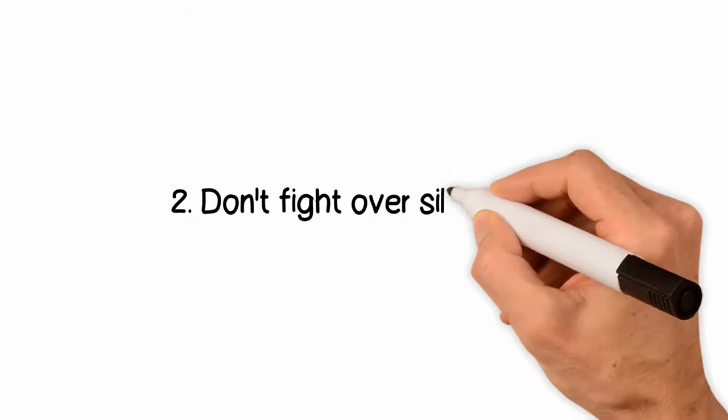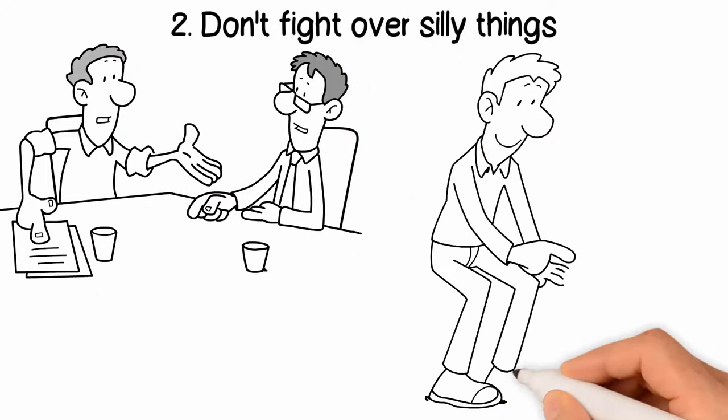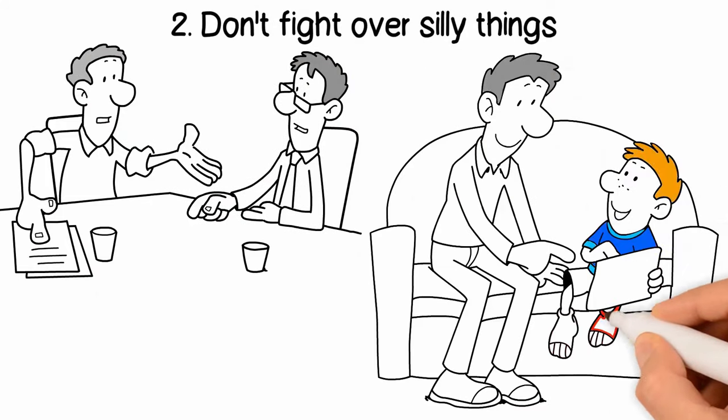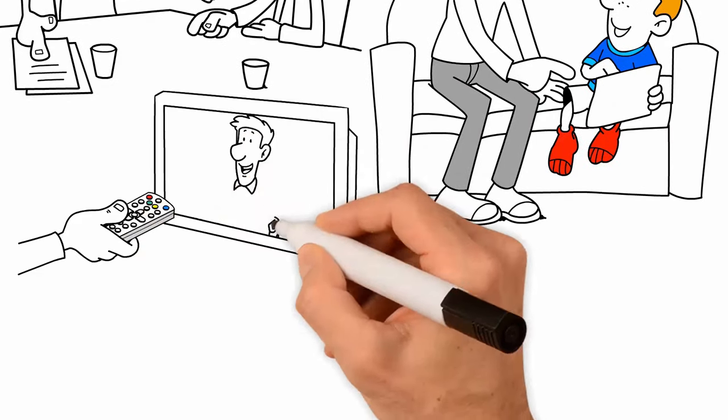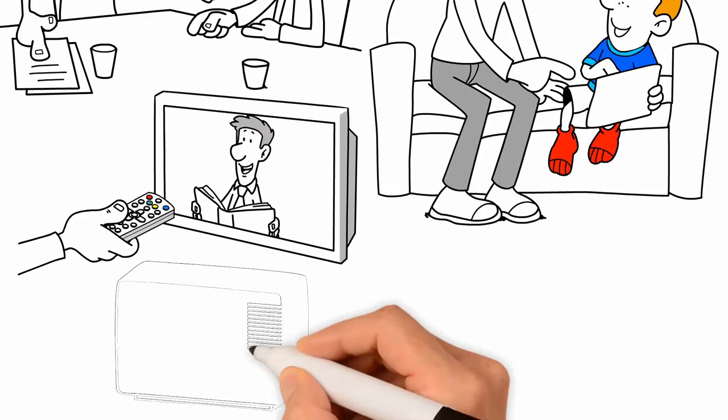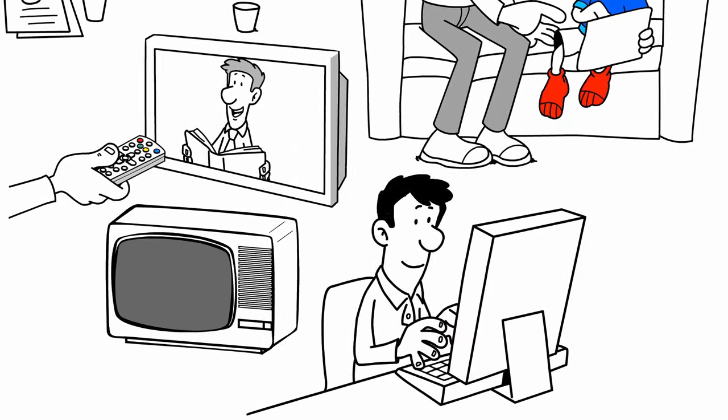Number two: don't fight over silly things. Some things are worth fighting over, like are your children going to live near enough to you that you can have a meaningful relationship? And some aren't. Things like who will get the new TV and who will take the old one just not worth fighting about.